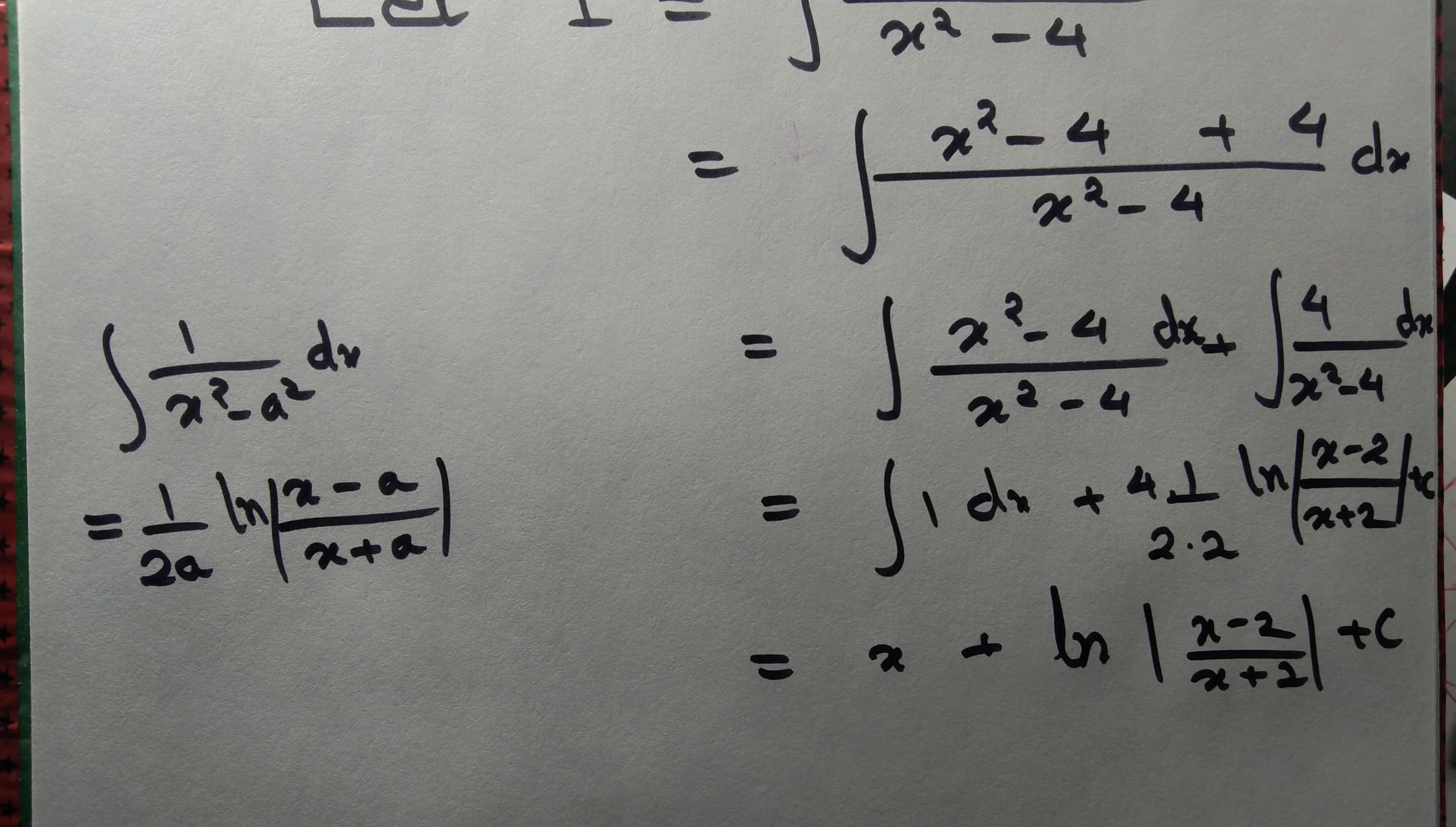4 gets cancelled, plus ln of x minus 2 by x plus 2 plus some constant of integration. Thank you very much!